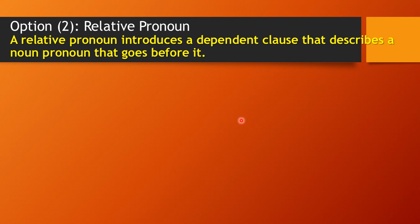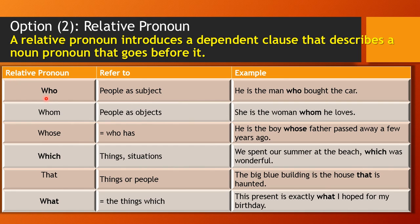The second option was the relative pronoun. The relative pronoun introduces a dependent clause that describes a noun or pronoun that goes before it. We have: 'who' — refers to people as subject: 'He is the man who bought the car.' 'Whom' — people as objects: 'She is the woman whom he loves.' 'Whose' — showing possession: 'He is the boy whose father passed away a few years ago.' 'Which' — things and situations: 'We spent our summer at the beach, which was wonderful.' 'That' — things or people: 'the house that is haunted.' 'What' — the thing which: 'This present is exactly what I hoped for my birthday.'